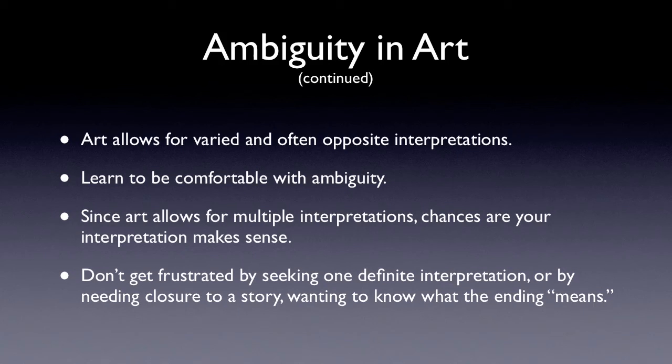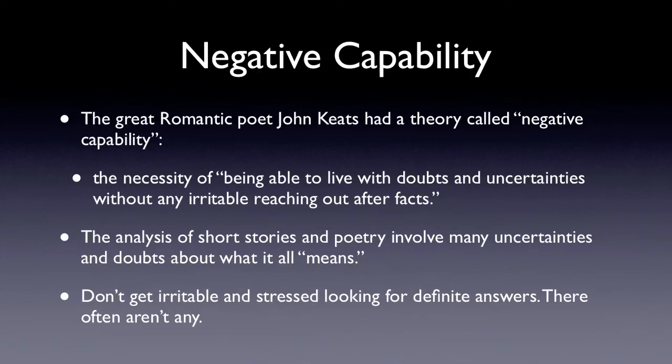Since art allows for multiple interpretations, the chances are increased that your interpretation is valid and defensible. The problem is when people get frustrated and see one definite interpretation, or need closure to a story, wanting to know what the ending means. The great romantic poet John Keats had some good advice. He had a theory called negative capability, which he described as the necessity of being able to live with doubts and uncertainties without any irritable reaching out after facts. In the analysis of short stories and poetry, you will find many uncertainties and have many doubts about what it all means. Don't get irritable and stressed looking for definite answers — there usually aren't any.